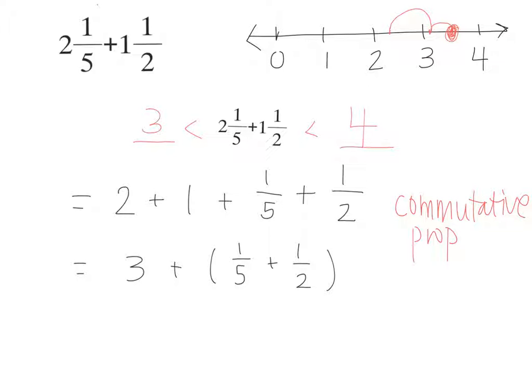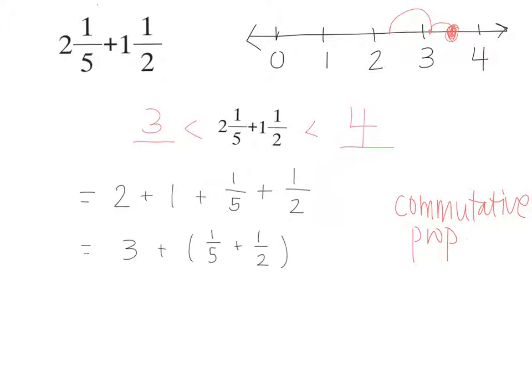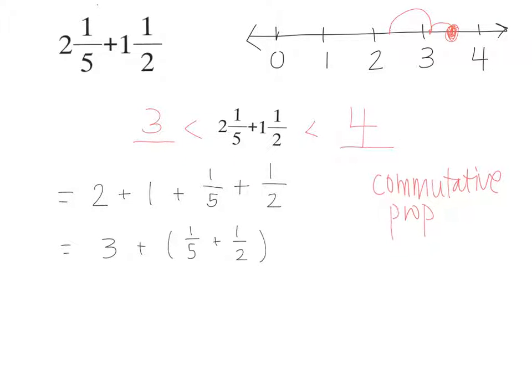What that allows me to do is then I can add the whole numbers 2 plus 1 equals 3, and then I have the fractions 1/2 plus 1/5. I can't add those yet though because they need to be having a common denominator. What would be the least common denominator of 1/5 and 1/2? 10.